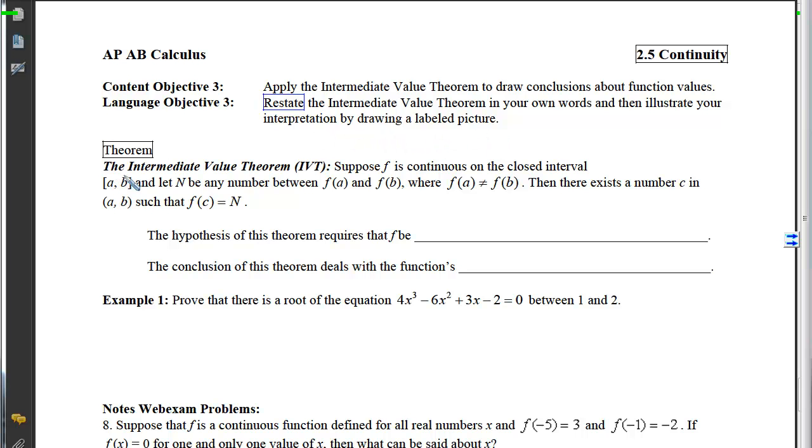Let's look at this theorem. The Intermediate Value Theorem, or IVT, tells us that if f is continuous on the closed interval from a to b, and n is any number between the y-coordinate associated with a and the y-coordinate associated with b, where those two y-coordinates are not the same—which is kind of obvious because if they were the same there's nothing in between them—so as long as those y-coordinates are different, I can choose a value n that's in between those two y-coordinates.